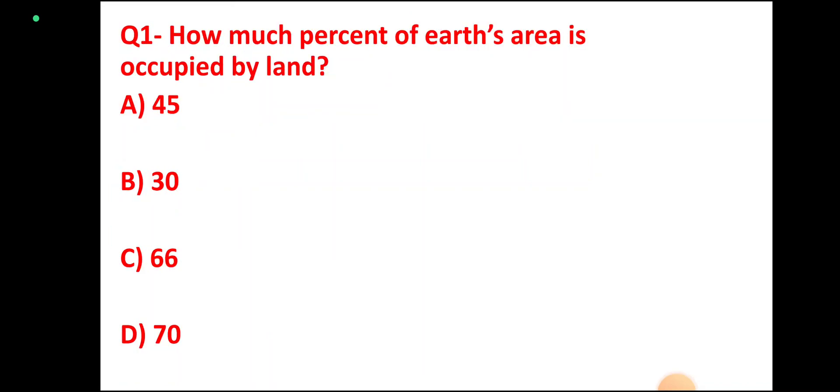Question 1: How much percentage of earth area is occupied by land? Options: 45, 30, 66, 70. Correct answer: 30, option B.